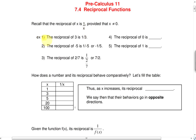Some examples of reciprocals: the reciprocal of 3 is 1 over 3. The reciprocal of negative 5 is 1 over negative 5, or negative 1 over 5. The reciprocal of 2 over 7 is 7 over 2. The reciprocal of 0 is undefined, and the reciprocal of 1 is 1.